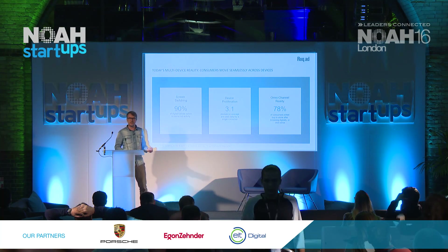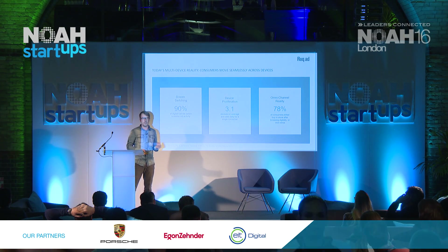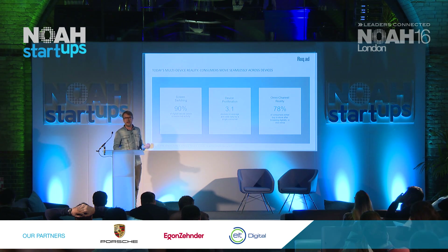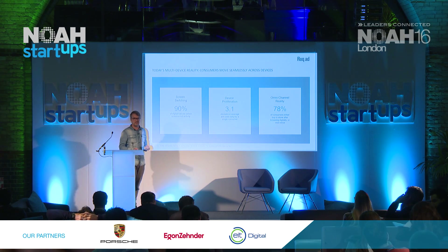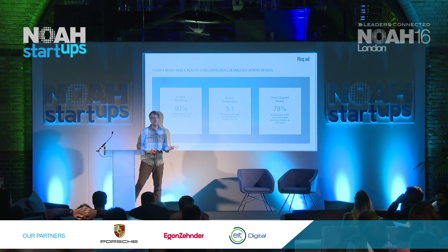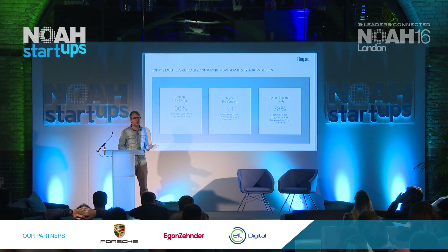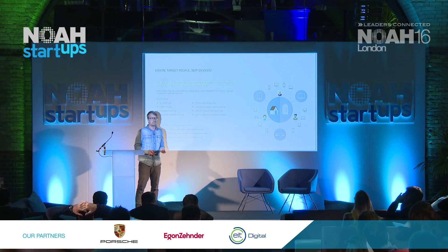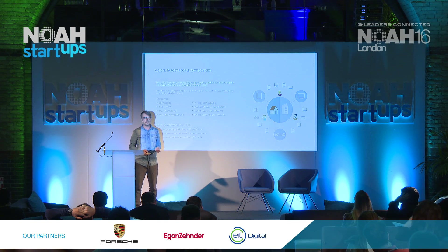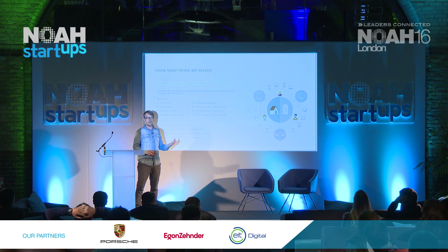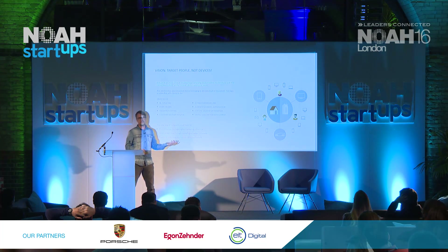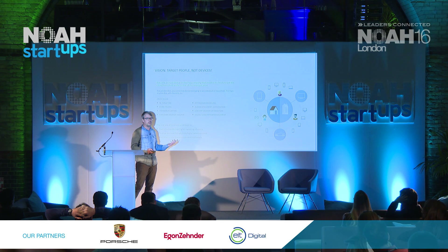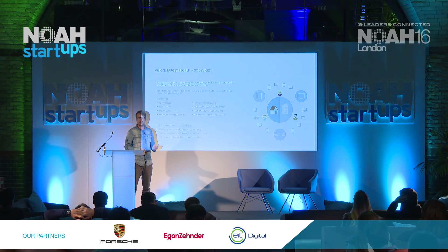As you may be aware, 90% of consumers are moving from one device to another while doing something. On average, they have three devices per person, and about 80% of consumers are consulting various channels before making a purchase decision. With that in mind, we created what we call a marketing graph. Here on the left, you see a typical household — one household, three people. Each of the three people have four devices, so that makes 12 devices. And then there are another three devices linked to the household, so in total this household has 15 devices.